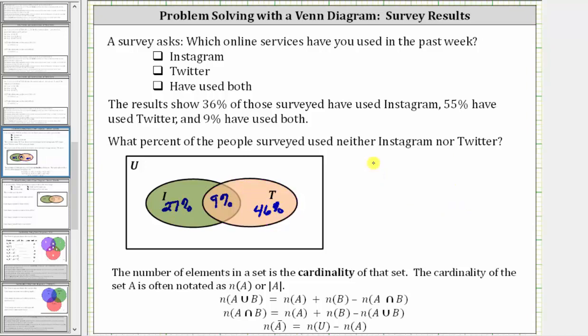Now going back to the question, what percent of people surveyed used neither Instagram nor Twitter? This means you're trying to find the percent of people that are in the universal set but not in set I or set T, which is this set here.